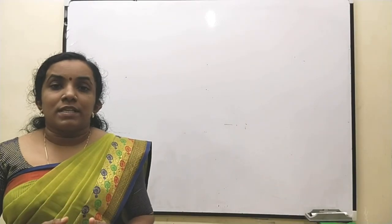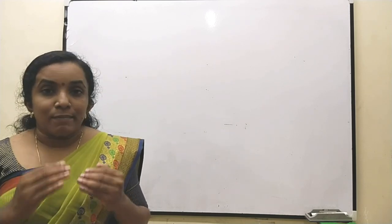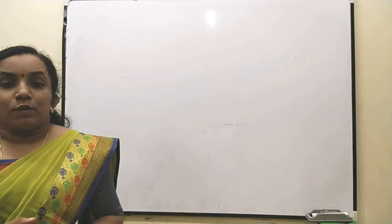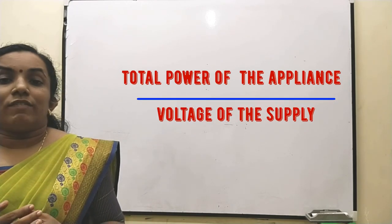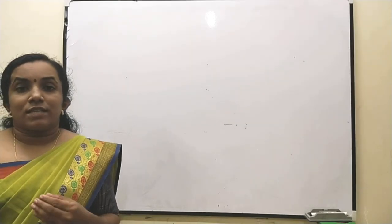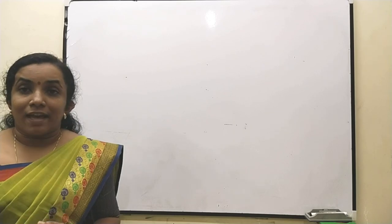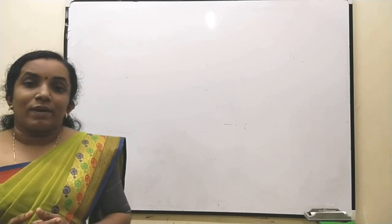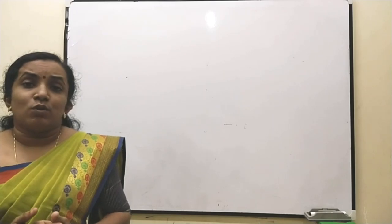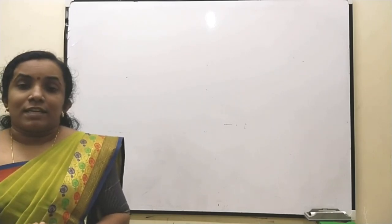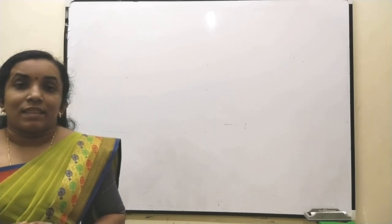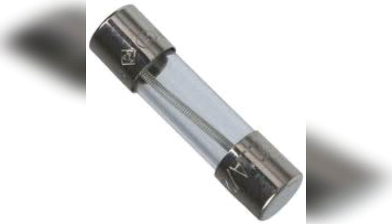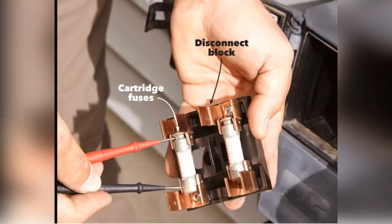A fuse wire permits current flow up to a limit called its current rating, which depends on the thickness of the fuse wire. The current rating equals the total power of the appliance divided by the supply voltage. A fuse has a current rating slightly higher than the maximum current the circuit can tolerate. For sensitive and expensive appliances, cartridge fuses are used; these are fixed-value fuses built into the body of the appliance.